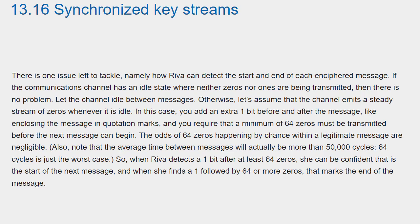The odds of 64 zeros happening by chance within a legitimate message are negligible. Also note that the average time between messages will actually be more than 50,000 cycles — 64 cycles is just the worst case. So when Reva detects a one bit after at least 64 zeros, she can be confident that this is the start of the next message. And when she finds a one followed by 64 or more zeros, that marks the end of the message.